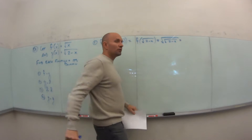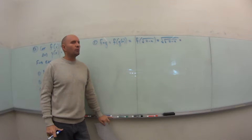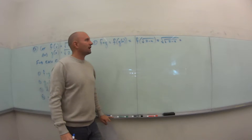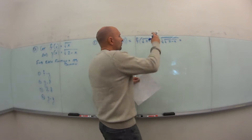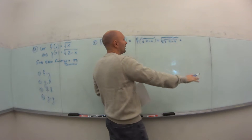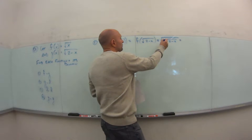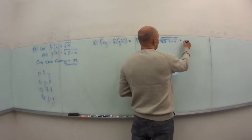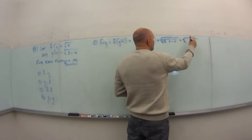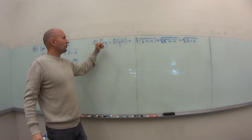We need to simplify this double radical. From section 1.1, you need to know your radical math. When we have multiple roots, we can multiply the index values: 2 times 2 is 4. So this simplifies to the fourth root of (2 − x). That's our composite function f∘g.